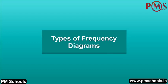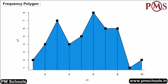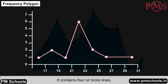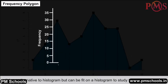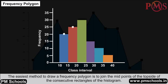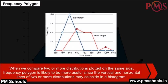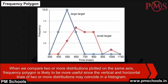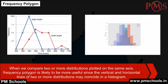Frequency polygon: It is a plane diagram bounded by straight lines containing four or more lines. It is an alternative to the histogram and can be fitted on a histogram to study the shape of the curve. The easiest method is to join the midpoints of the top sides of consecutive rectangles of the histogram. Frequency polygons are more useful when comparing two or more distributions plotted on the same axis, since vertical and horizontal lines of multiple distributions may coincide in a histogram.